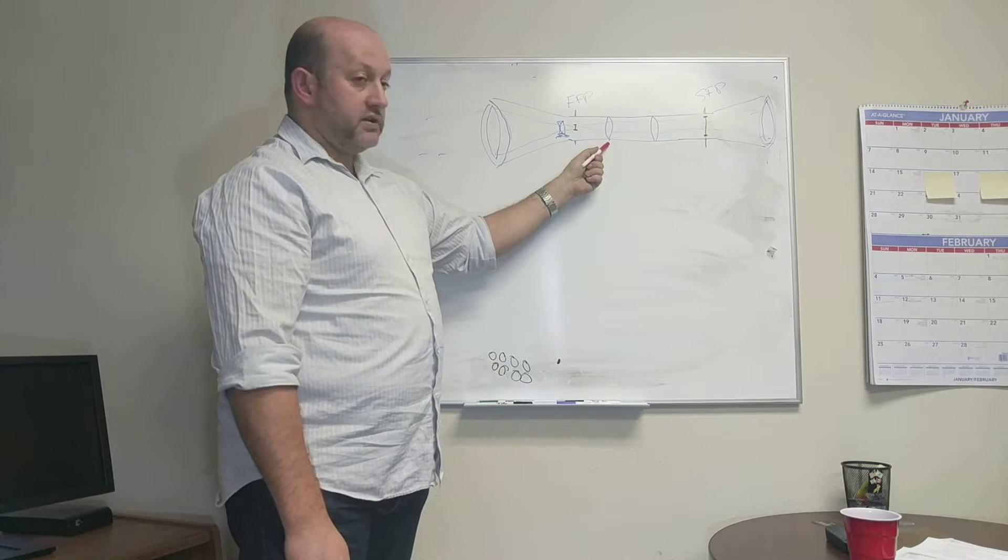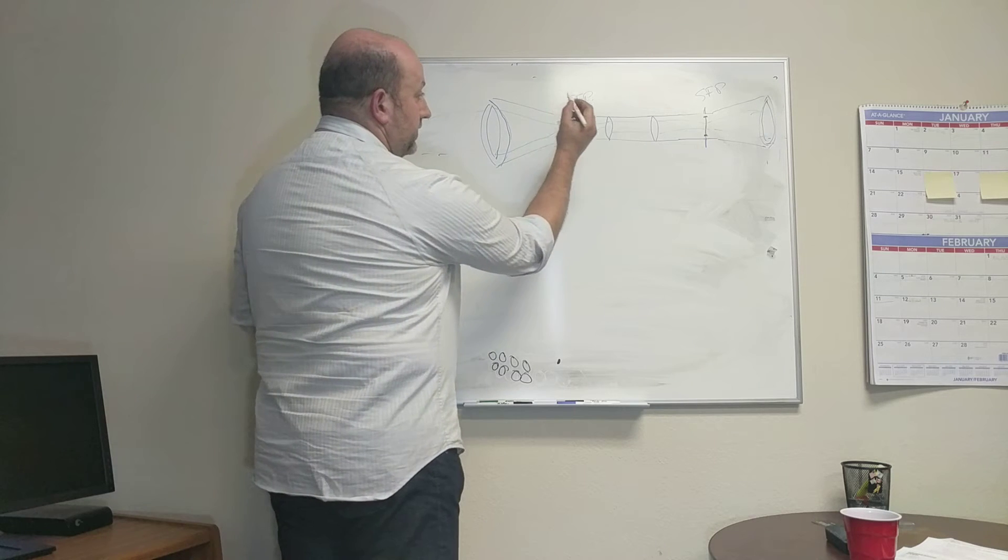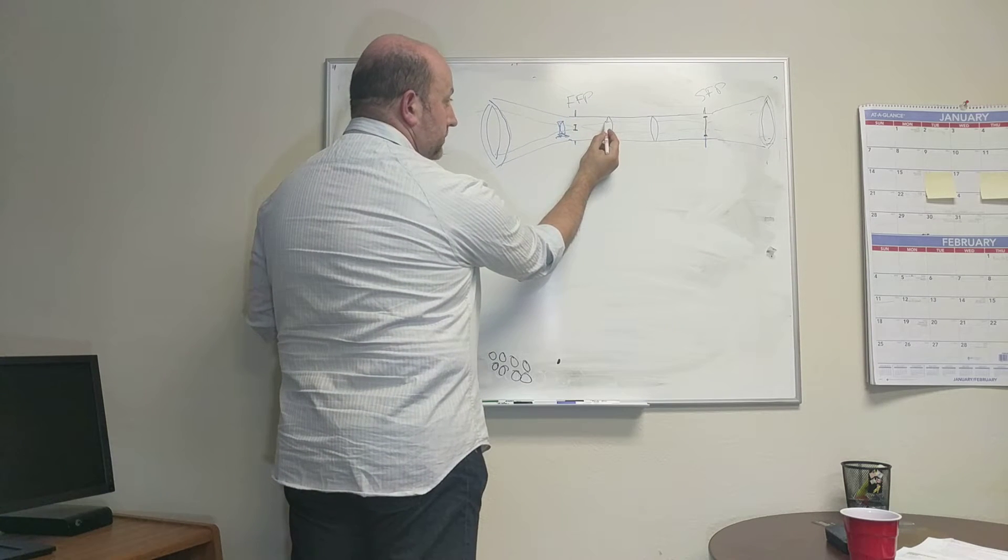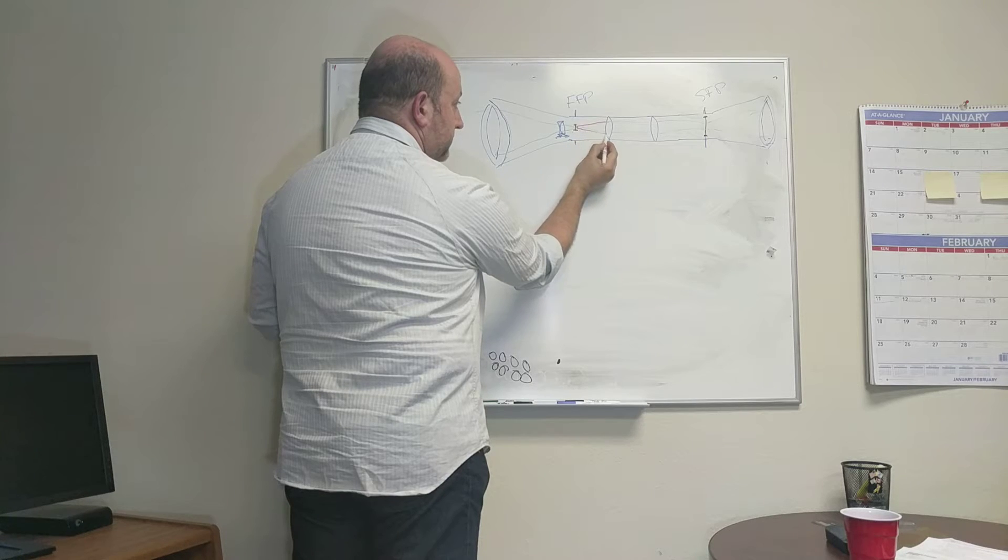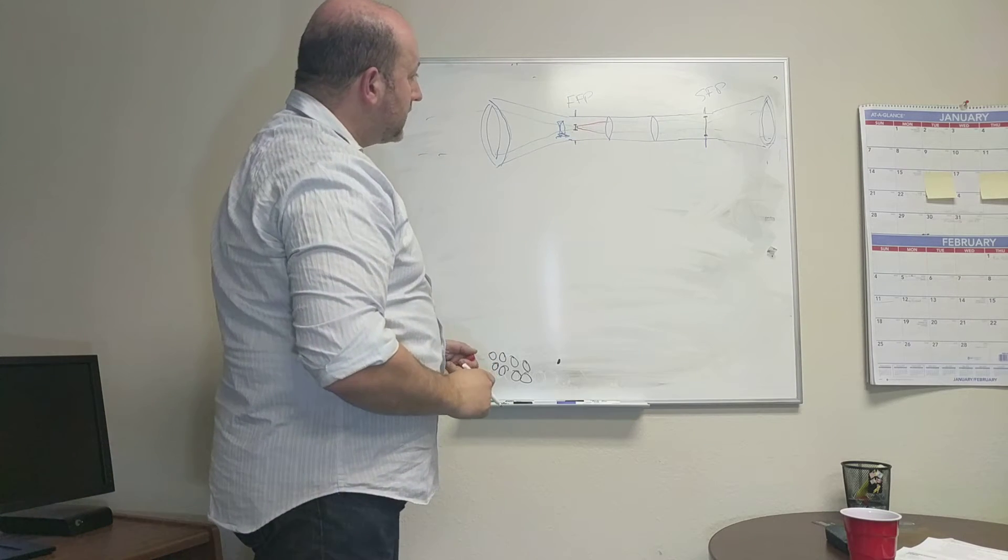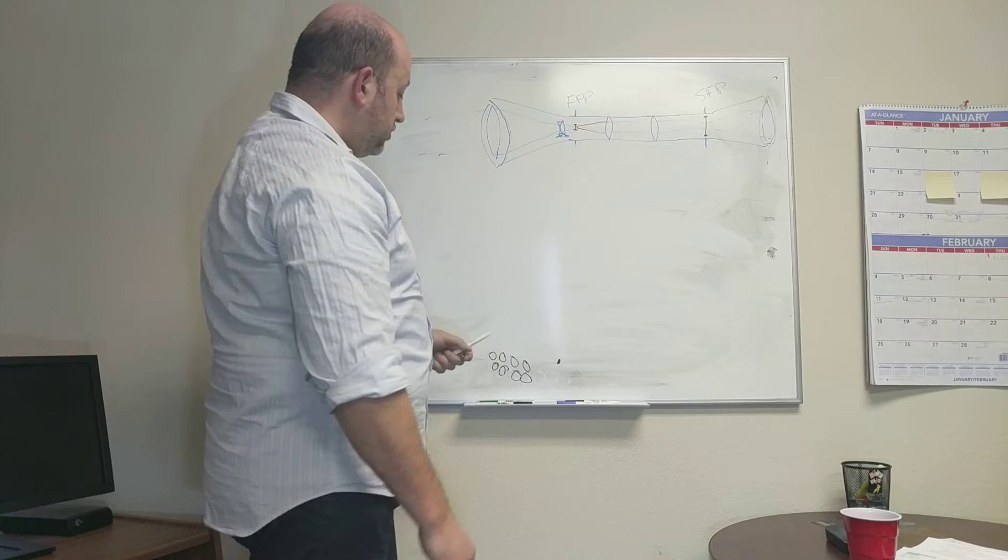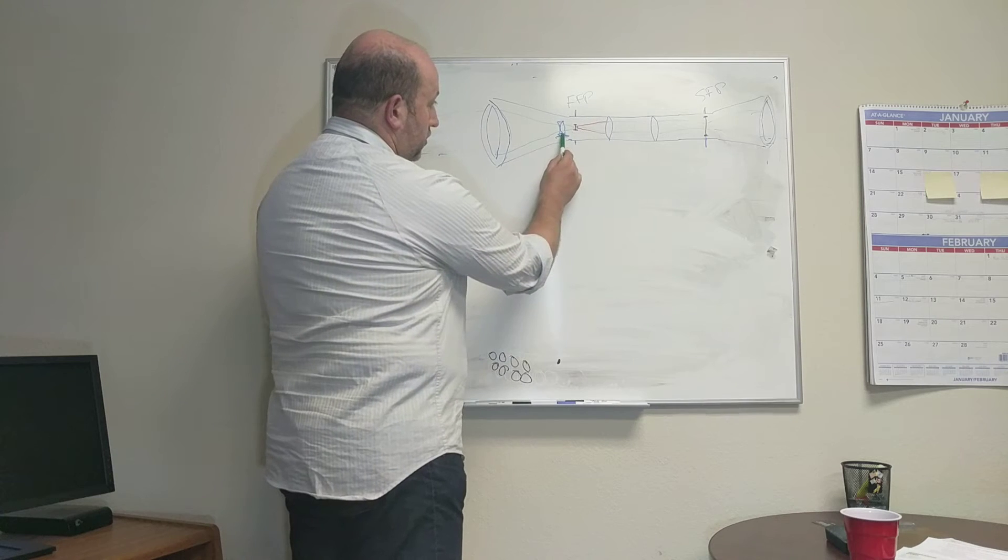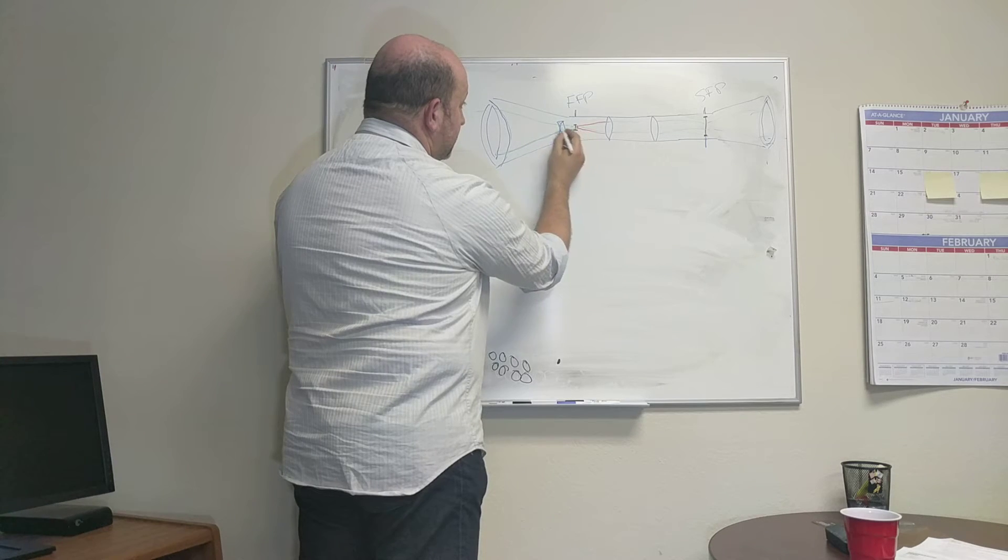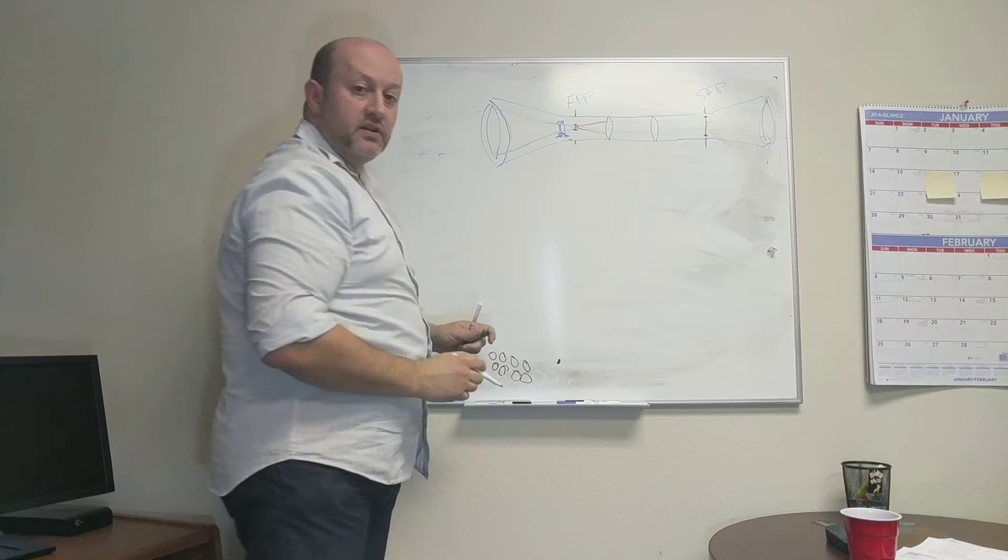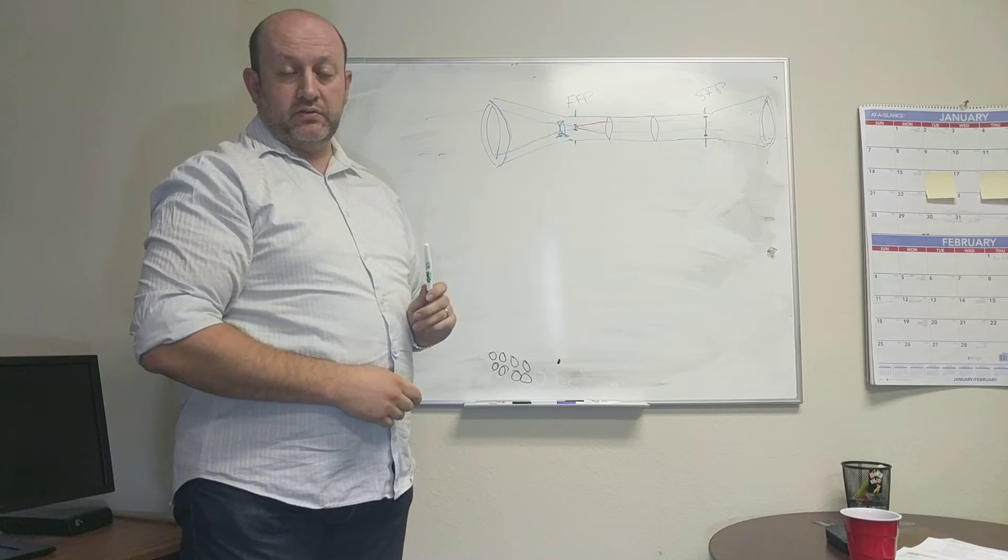So what happens if at the factory when we're building this scope, the erector lens system was not perfectly focused on the front focal plane? Then the image that is going to look perfectly sharp through the erector system is going to be something focused—let's say it's a little bit closer here, can be front or back focused, doesn't matter. So what happens now is that to get the perfectly focused image, you will adjust your side focus so that the objective lens system creates an image in the same place where the erector system picks it up, but it's not necessarily the same place where the reticle is.